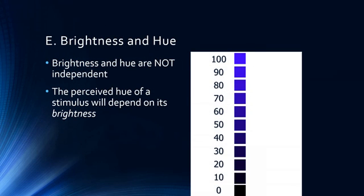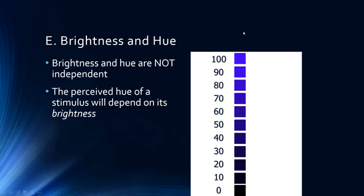These two properties are not independent of one another — brightness and hue are related. The perceived hue of a stimulus will depend on its brightness. For example, these swatches are all the same wavelength, simply brighter versus dimmer. At 100% brightness you see a vivid blue; at 0% brightness it's black. The dimmer a blue is, the blacker it looks. So what we call navy blue is simply reflecting back less light than a brighter version of blue.